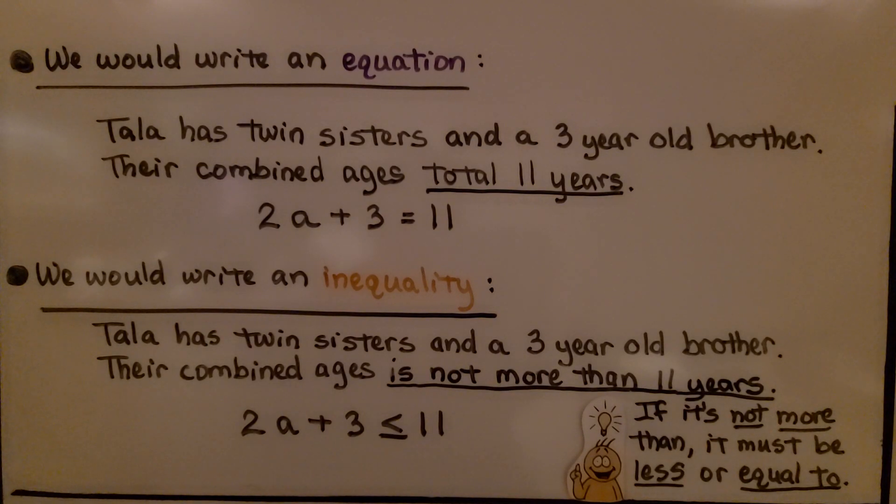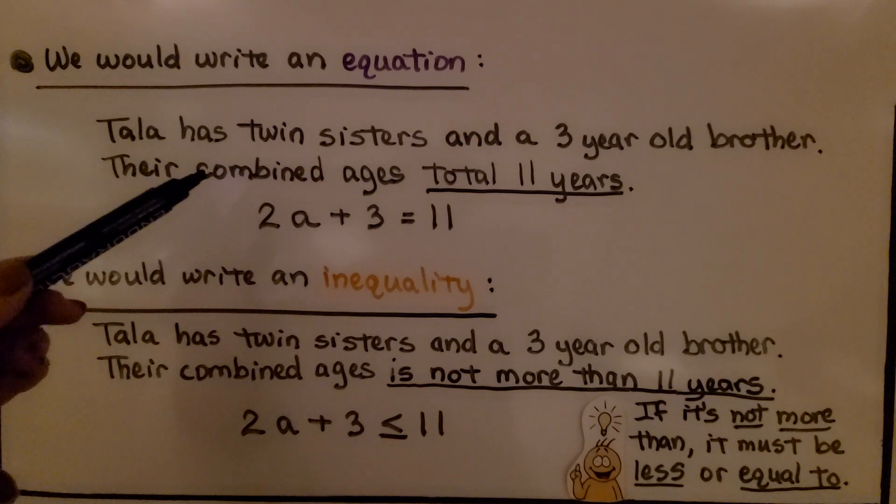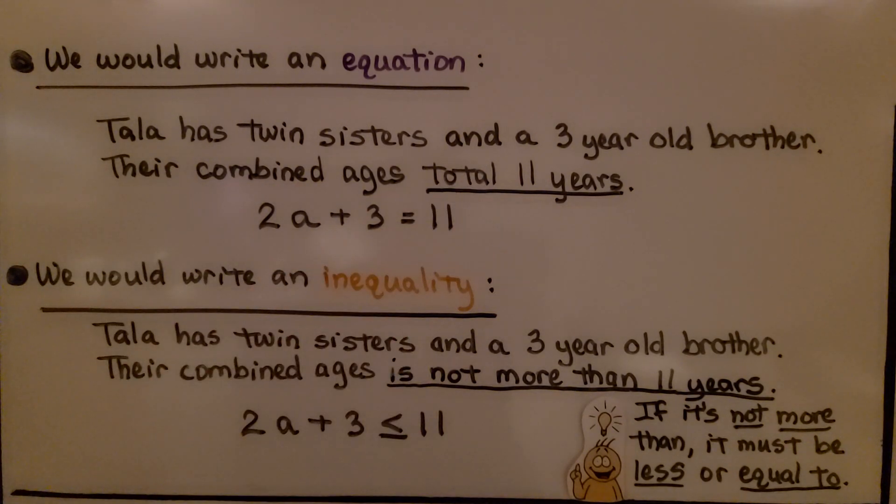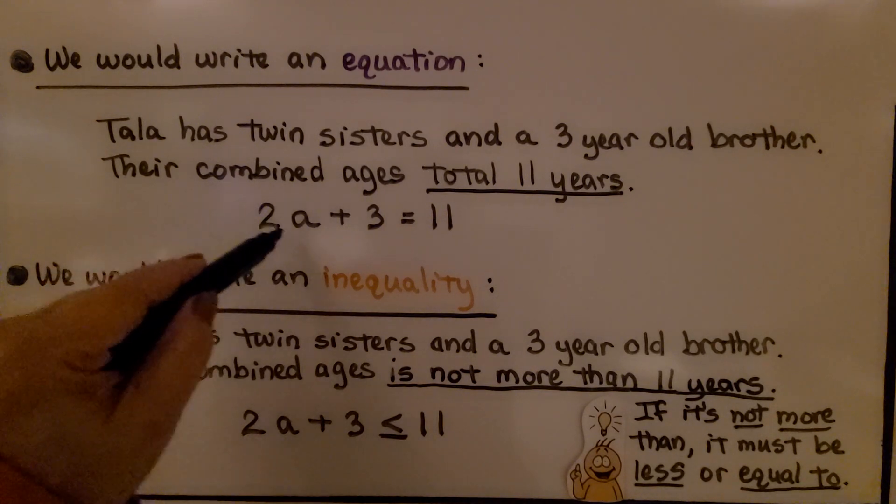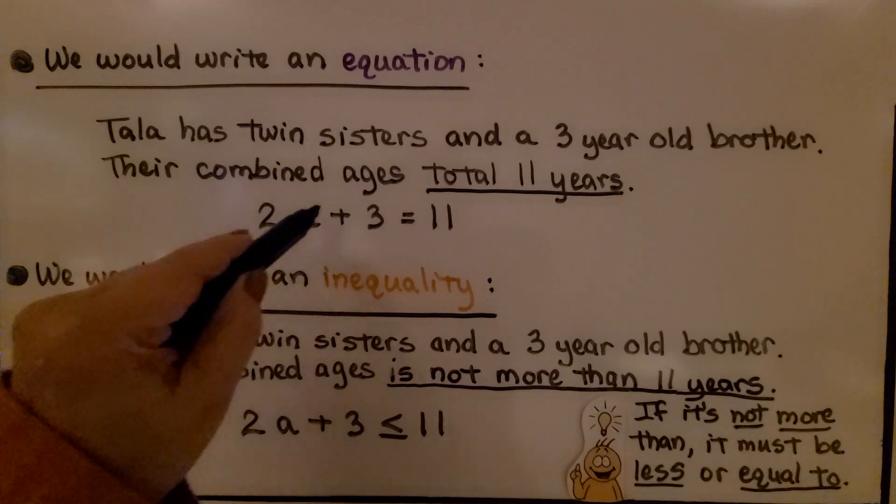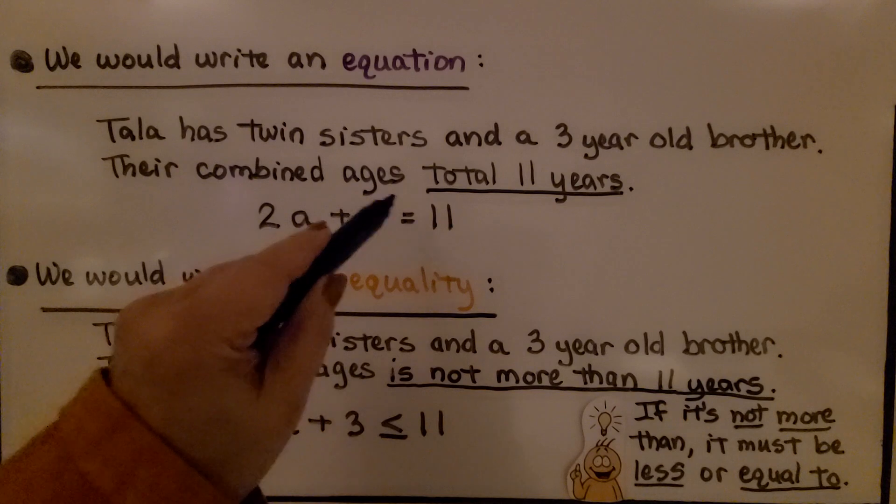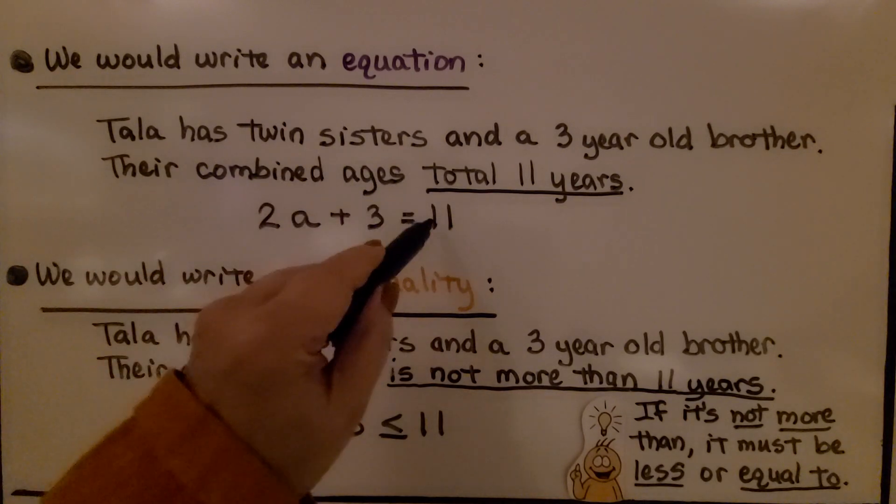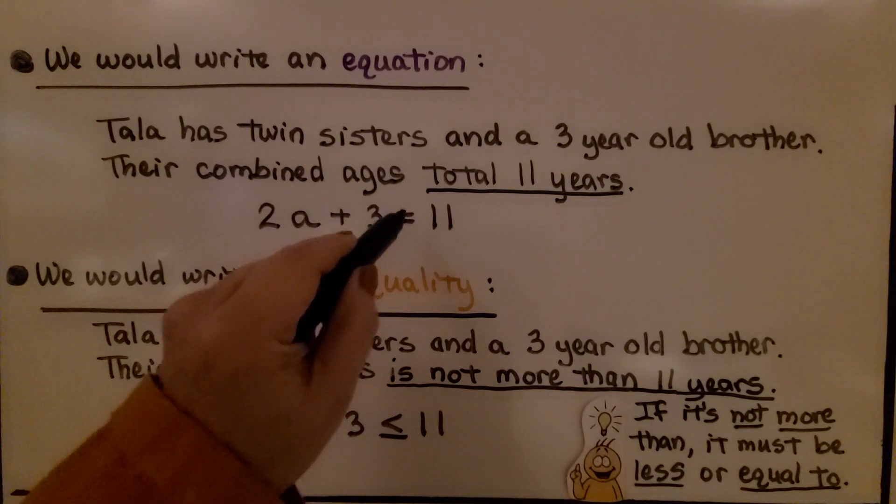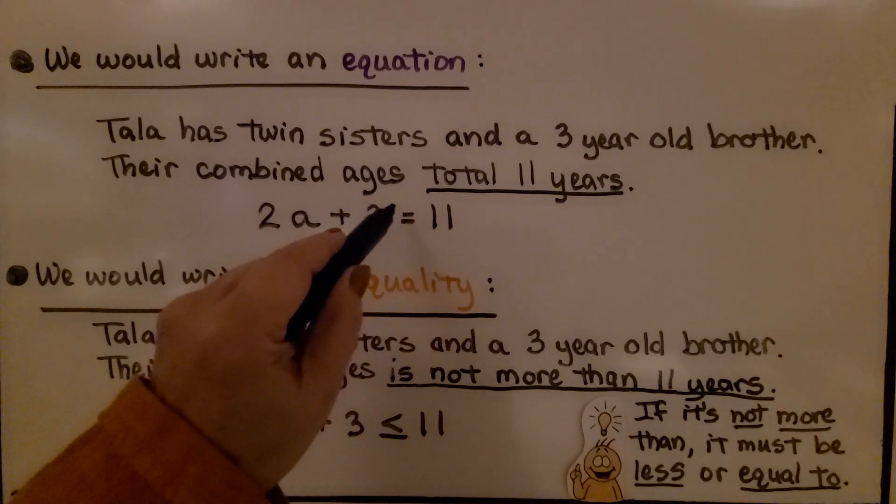We need to understand when we would write an equation or when we would write an inequality. Here would be an equation. Tala has twin sisters and a 3-year-old brother. Their combined ages total 11 years. She has two sisters of some age plus a 3-year-old brother and all together it totals 11. So we know it is equal to 11. This would be an equation.